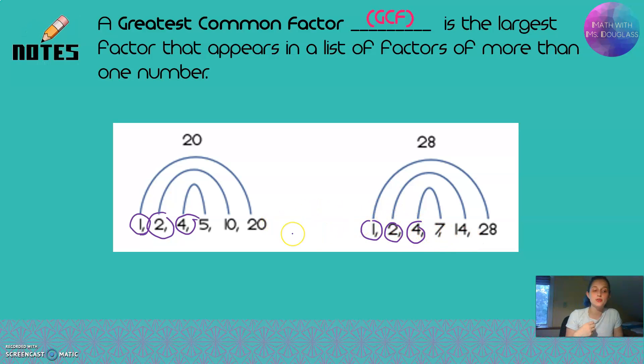Okay, so when we're looking for the greatest common factor, we're looking at all those numbers that they have in common that are on both lists, and we're looking for the biggest one of those. Out of the numbers one, two, and four, four is the biggest, the greatest. So my greatest common factor between 20 and 28 is four.